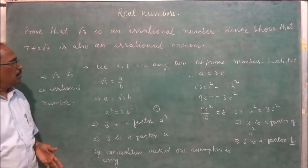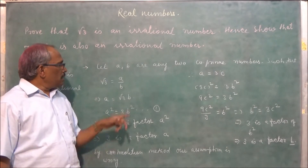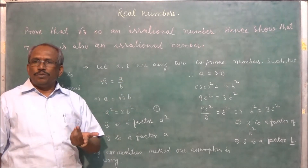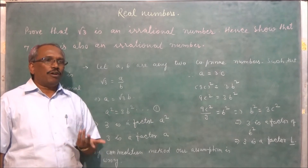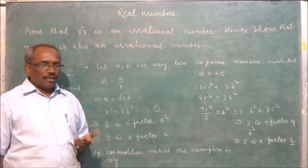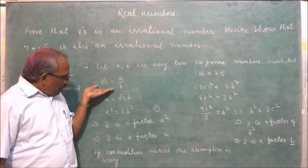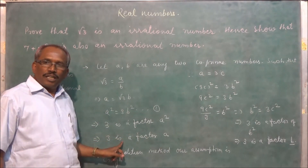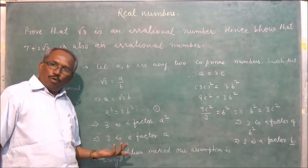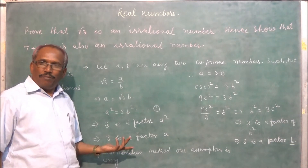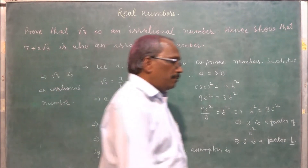This implies root 3 is an irrational number — it cannot be written as a ratio of two integers in lowest terms. A and B being co-prime means they do not have any common factor. This completes the 2-mark proof that root 3 is irrational.